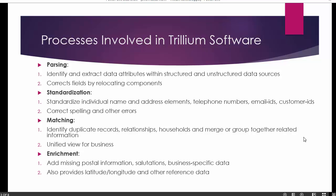The next process is standardization. It standardizes individual names such as customer name or business name, including first name, last name, middle name, or full business name. It also standardizes address elements like address line 1, address line 2, state, city, zip, and country. Additionally, it standardizes telephone numbers, email IDs, and customer identity attributes such as SSN for US, or business identification numbers. It also corrects spelling errors and typing mistakes during the standardization process.